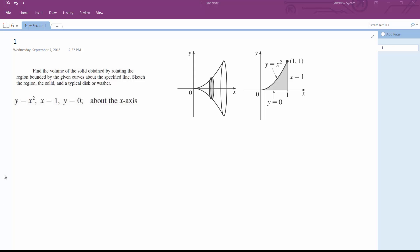All right, so we want to find the volume that's encased when you take the curve y equals x squared and bound it between y equals zero and x equals one, and then you rotate around the x-axis.